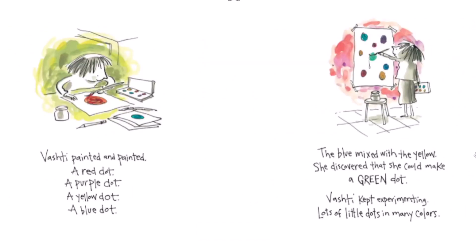Vashti painted and painted: a red dot, a purple dot, a yellow dot, a blue dot. The blue mixed with the yellow. She discovered that she could make a green dot. Vashti kept experimenting, lots of little dots in many colors.